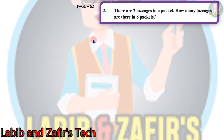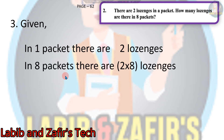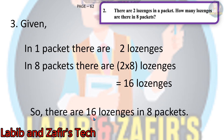Now we are on page 62, the third word problem: There are 2 logens in a packet. How many logens are there in 8 packets? In 1 packet there are 2 logens, so in 8 packets there are 2 into 8 logens. If we multiply 2 by 8, that will be 16 logens. So there are 16 logens in 8 packets.